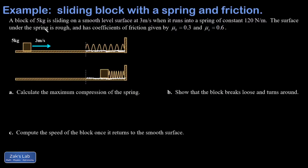On this problem, I've got a 5 kilogram block sliding along at 3 meters per second, and it runs into a spring. The spring is going to compress, but the complication is that I have friction this time — kinetic friction and static friction — but only in the area right under the spring, where it's rough. Maybe the spring scratched up the surface from doing this experiment over and over again.